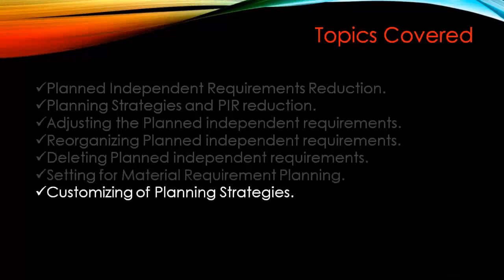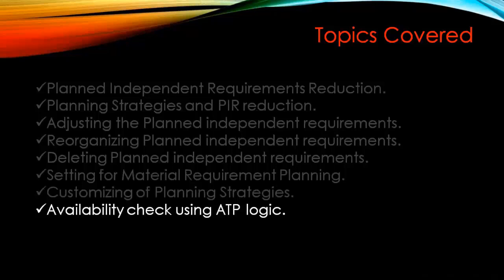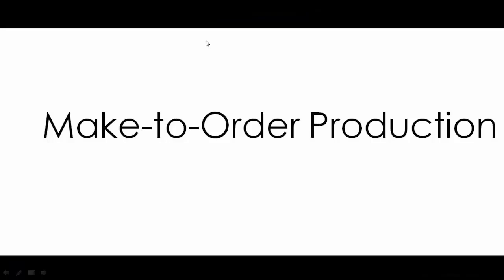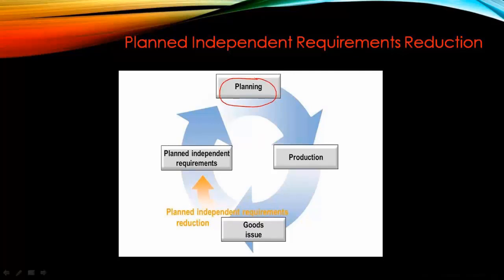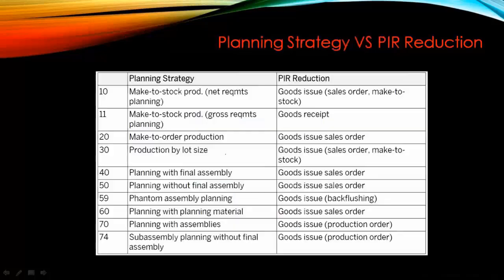We'll also cover settings from MRP customizing of planning strategies and availability check using ATP logic. First, we'll talk about make-to-order production that we started earlier. In a typical scenario, first we enter planned independent requirements in MD61, then production starts, and from production the sales order will be goods issued and delivered to the customer.